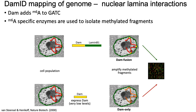In the second experiment, what you're going to do is express the DAM protein domain on its own. And then the adenine in the GATC motif, in theory anywhere in the genome, not just the regions associated with the nuclear lamina, will also get methylated.